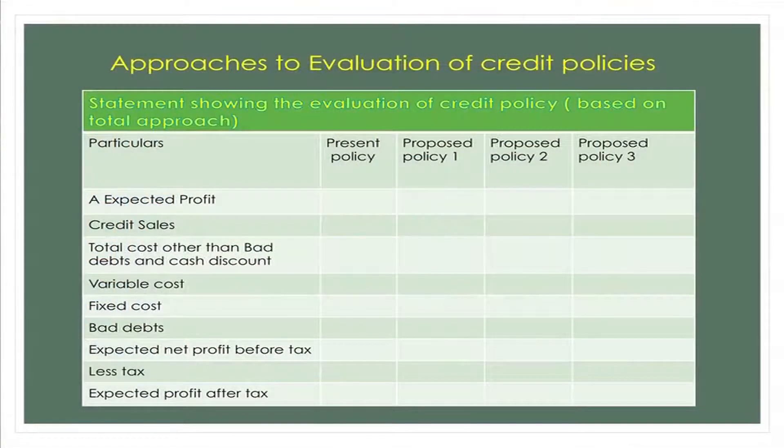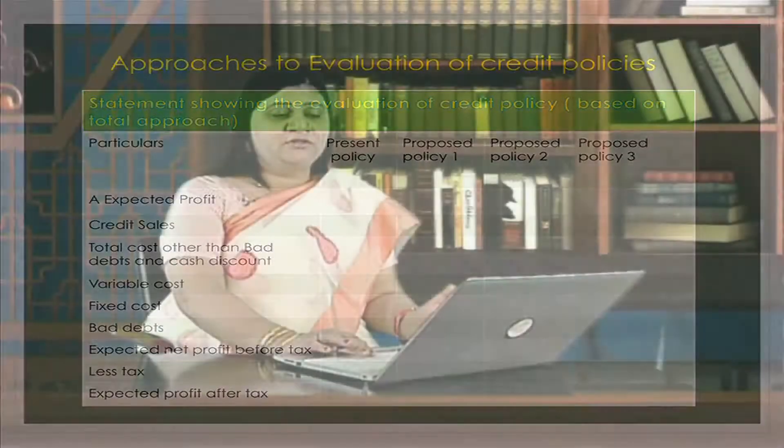We have taken up the basic aspects of management of receivables in our theoretical discussion. The conceptual framework covers credit policies, cash discount policies, credit analysis, and control over receivables, including associated costs. Another important aspect is approaches to evaluation of credit policies. Credit policies can be evaluated using two methods: the total approach method and the net approach method. We will take up a tabular representation to assess benefits from a credit policy using the total approach.